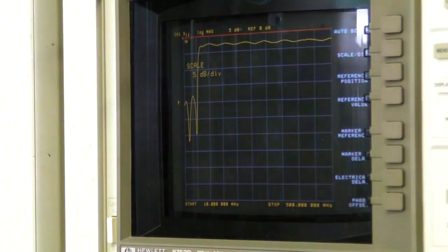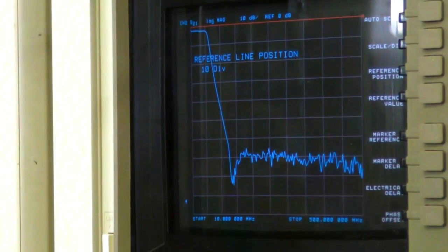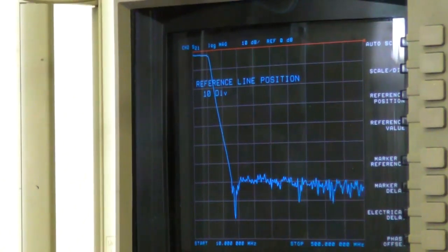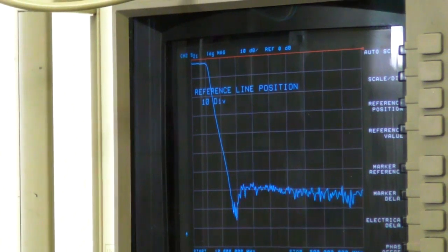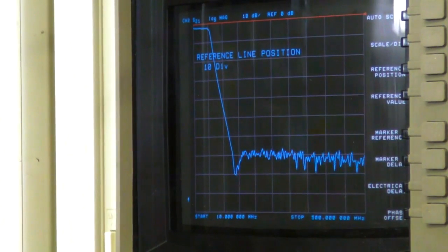That's what low-pass filters look like for reflection, and here's what they look like for transmission, and we'll do the same thing. Reference position 10. Since it's a passive device, everything is going to be down, so nothing will be above the reference line. This makes the displays pretty.